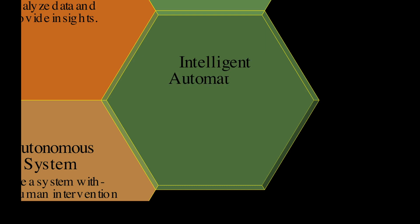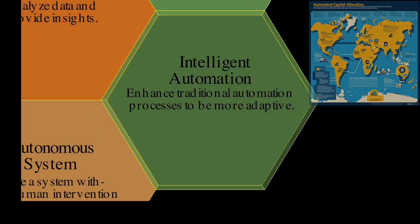Intelligent automation enhances traditional automation processes to be more adaptive. In capital markets, it can be used to aid capital allocation, dynamically adjusting allocation based on risk-adjusted returns.